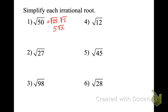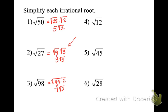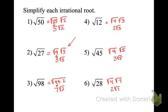Pause the recording and try problems 2 through 6. Let's check our work. √27 breaks down to 9 times 3, so that becomes 3√3. √98 — since it's even, divide by 2 — so 2 times 49, giving 7√2. I'm taking the perfect square out. √12 is made up of 4 and 3, so you should have gotten 2√3. √45 is made up of 9 times 5, so you get 3√5. And √28 is 4 times 7, so that's 2√7. Those are your solutions.